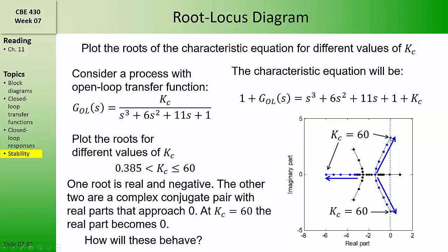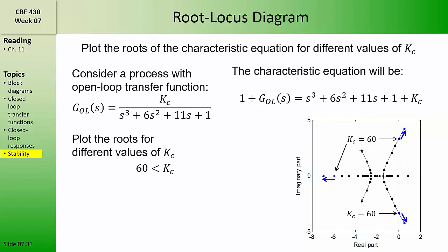When Kc equals 60, that complex conjugate pair of roots has a zero real part, meaning it is on the imaginary axis, representing sustained sine and cosine functions. As the real root moves further and further to the left, it represents faster and faster exponentially decaying functions. If we were to continue to increase Kc beyond 60, these two complex conjugate roots would have a positive real part, representing exponentially growing sine and cosine functions and making the process unstable.